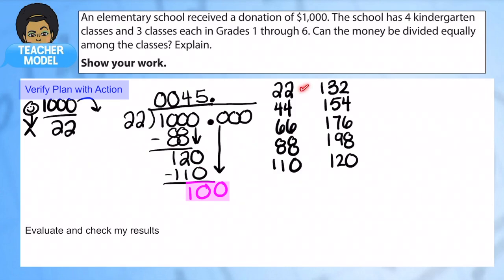How many 22s go into 100? 1, 2, 3, 4. So that's 88. We did that before. 12.